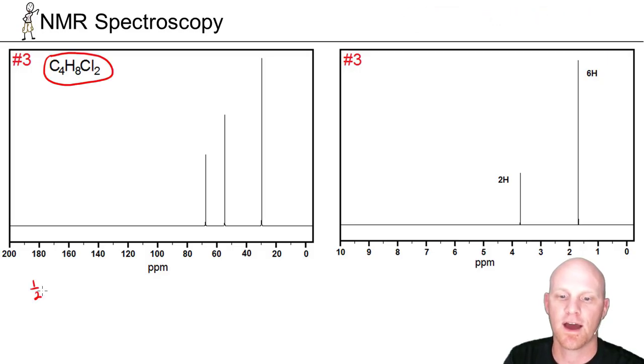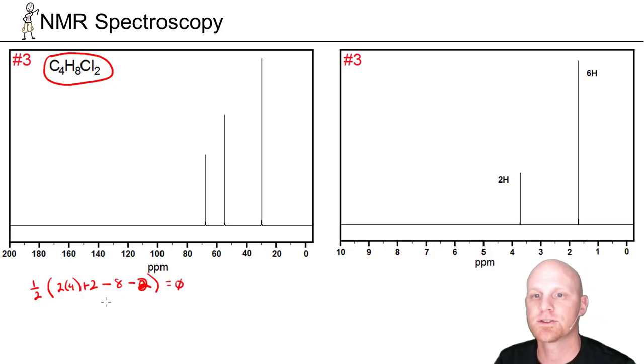First thing we'll do is calculate the hydrogen deficiency index. It's one half times 2 times the number of carbons plus 2, so then minus the number of hydrogens, we've got 8 of those, minus the number of halogens, we've got 2 of those. That's 2 times 4 is 8, plus 2 is 10, minus 10, and half of 0 is still 0.